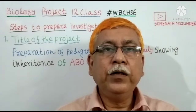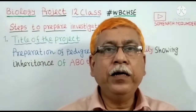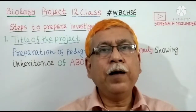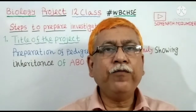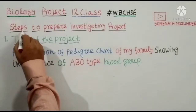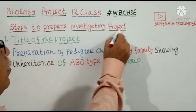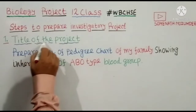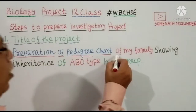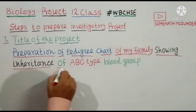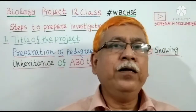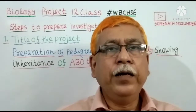First, you have to select a problem and accordingly give a title to your project. For example, if you want to prepare a pedigree chart showing the inheritance of ABO type blood group of your family, then your project title would be: 'Preparation of pedigree chart of my family showing inheritance of ABO type blood group.' You may choose any type of problem and give a title accordingly. This is an example only.